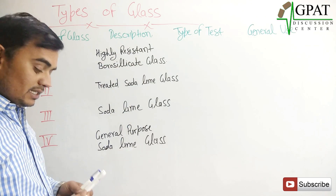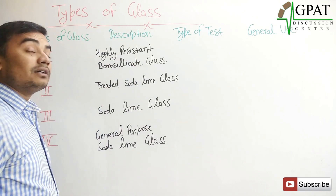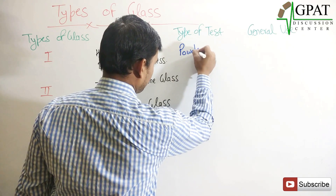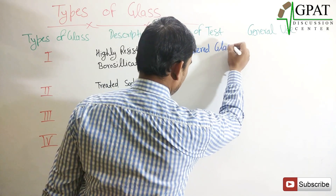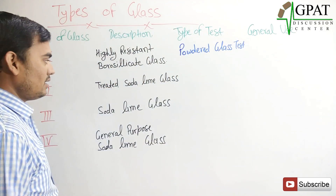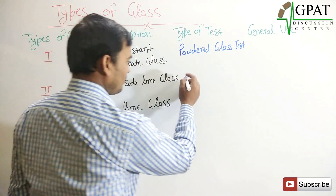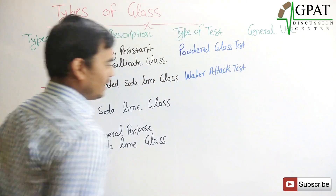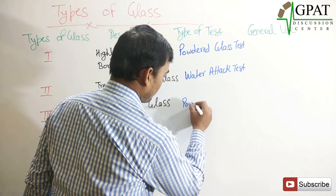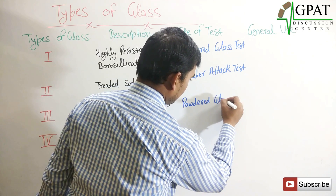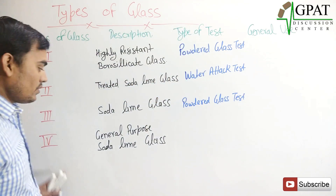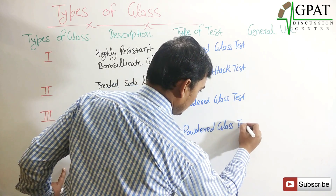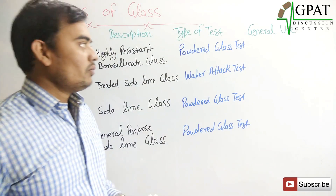Now, which type of test is performed for each glass? For Type 1 — highly resistant borosilicate glass — the powdered glass test is used. For Type 2 — treated soda lime glass — the water attack test is used. For Type 3 and Type 4, the powdered glass test is performed.